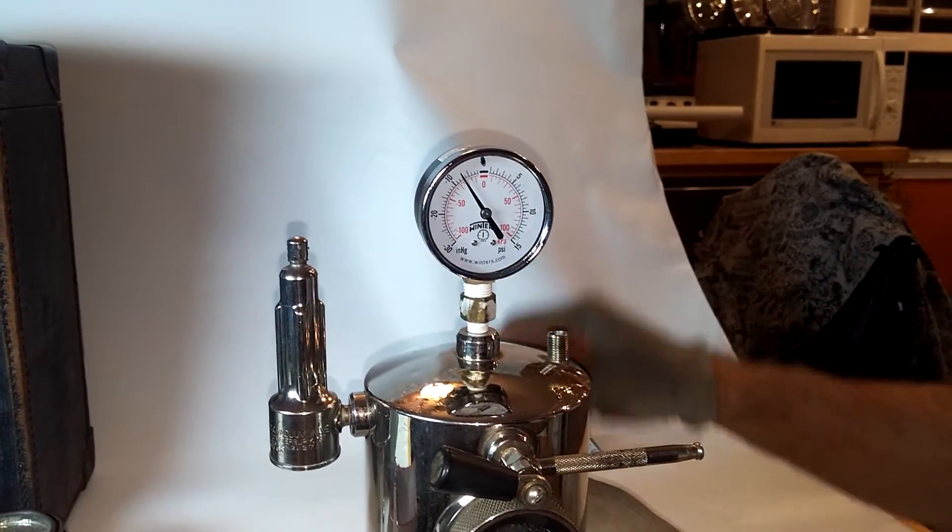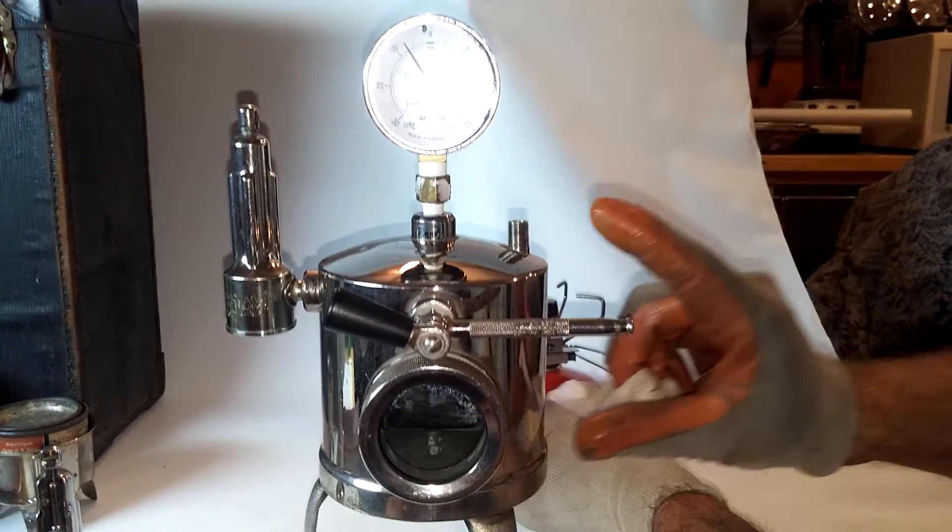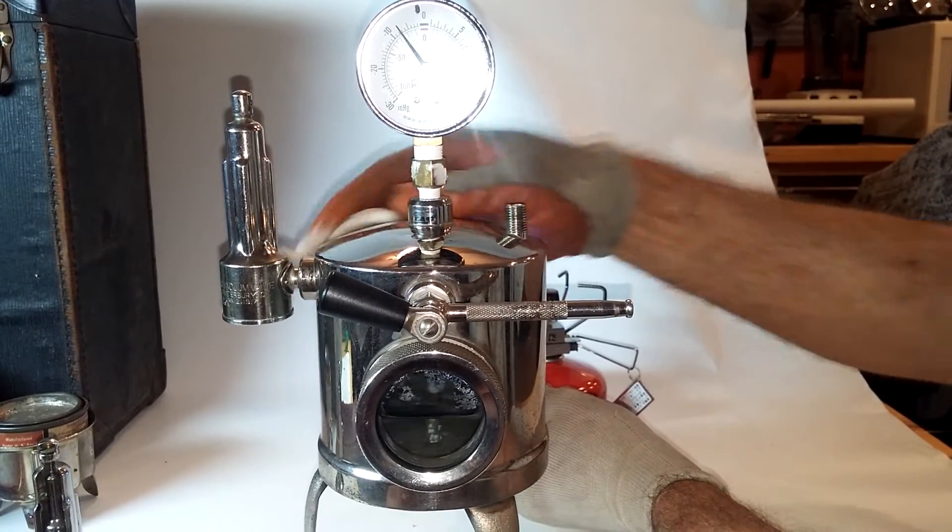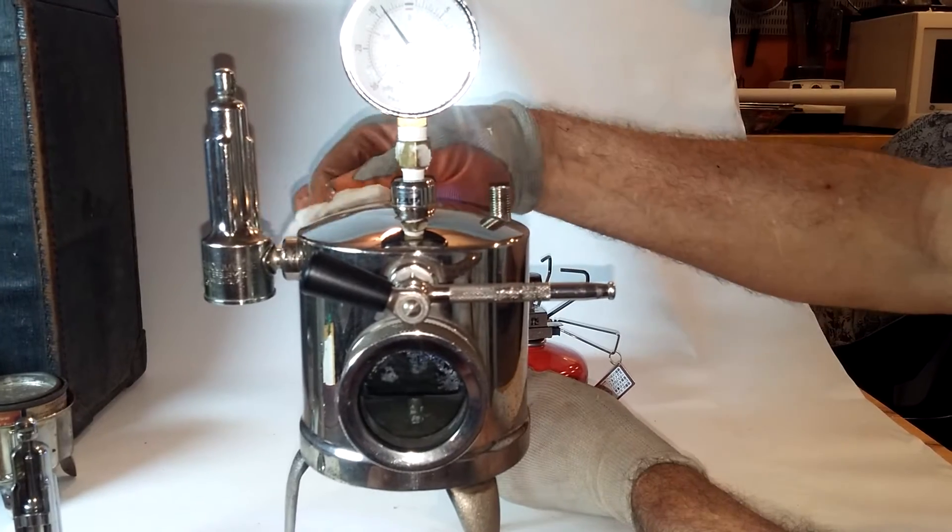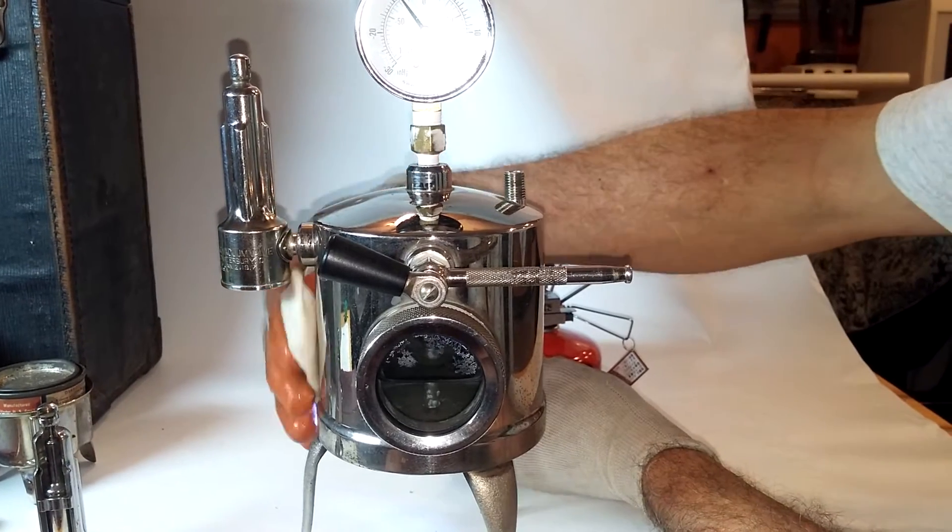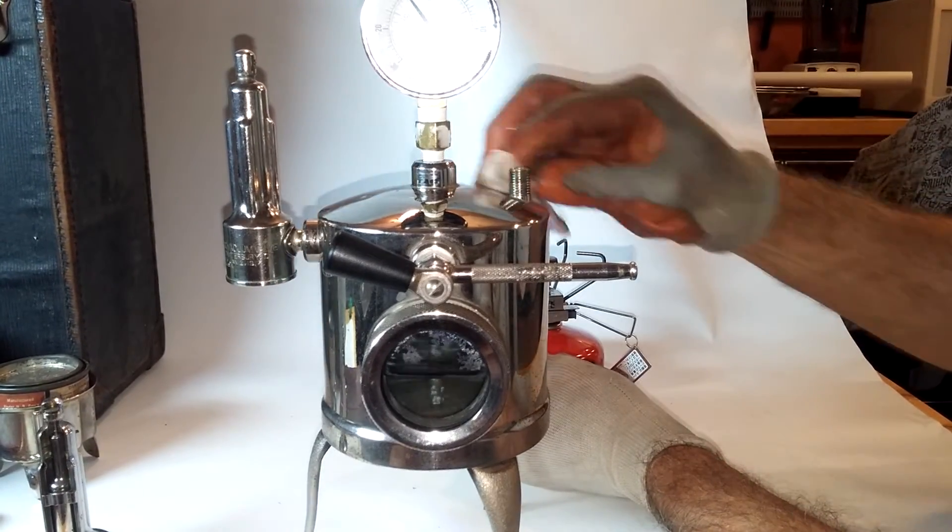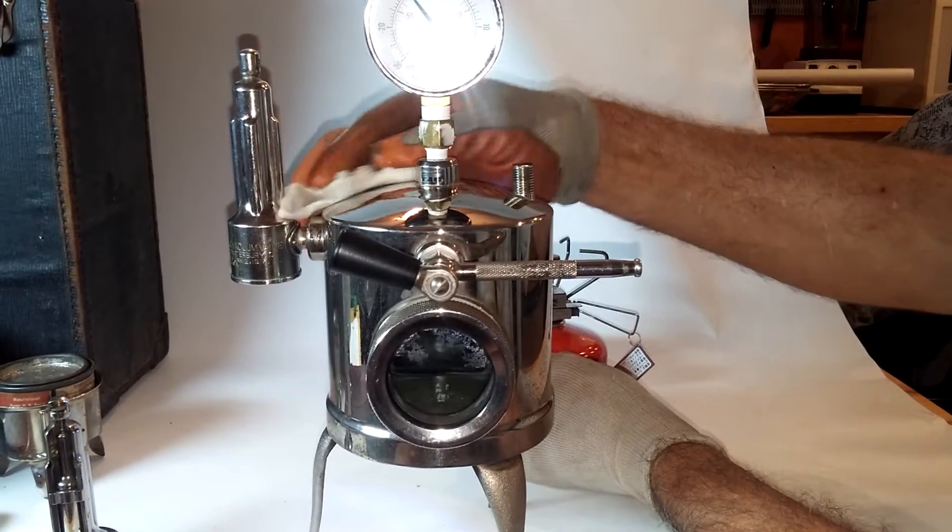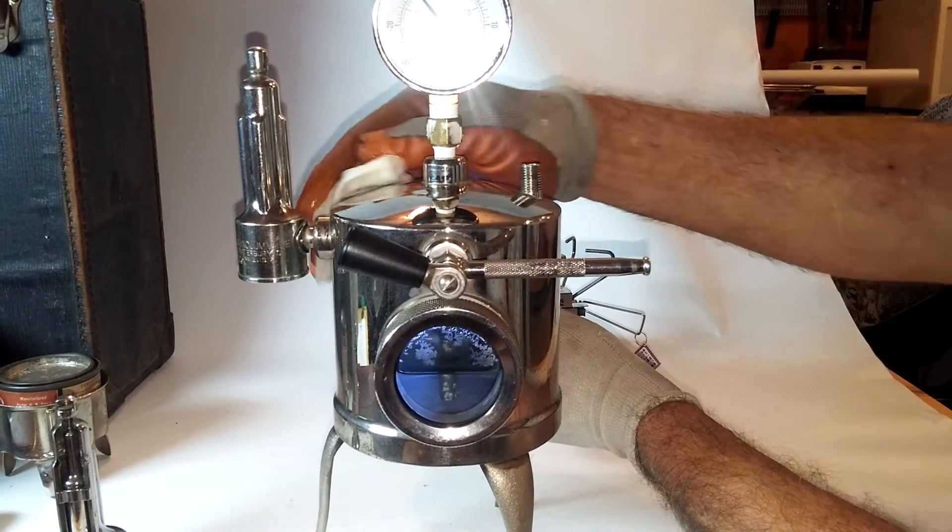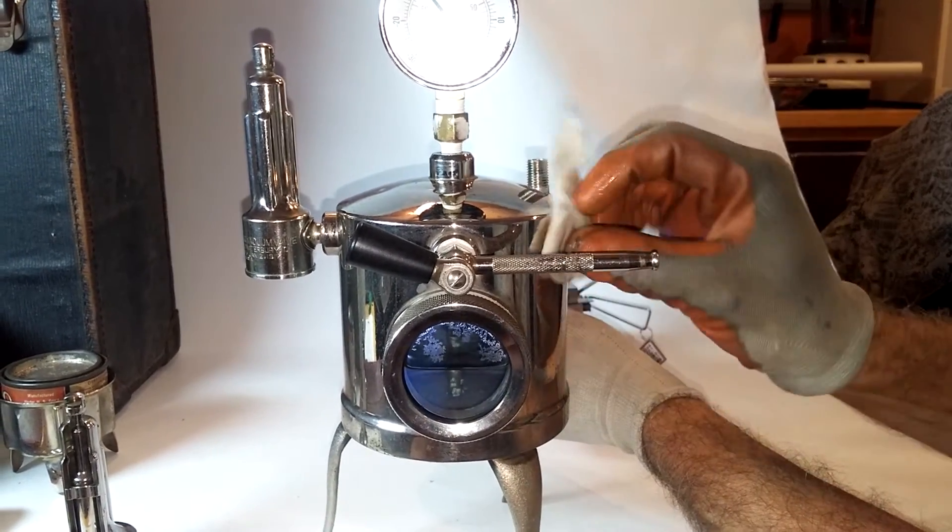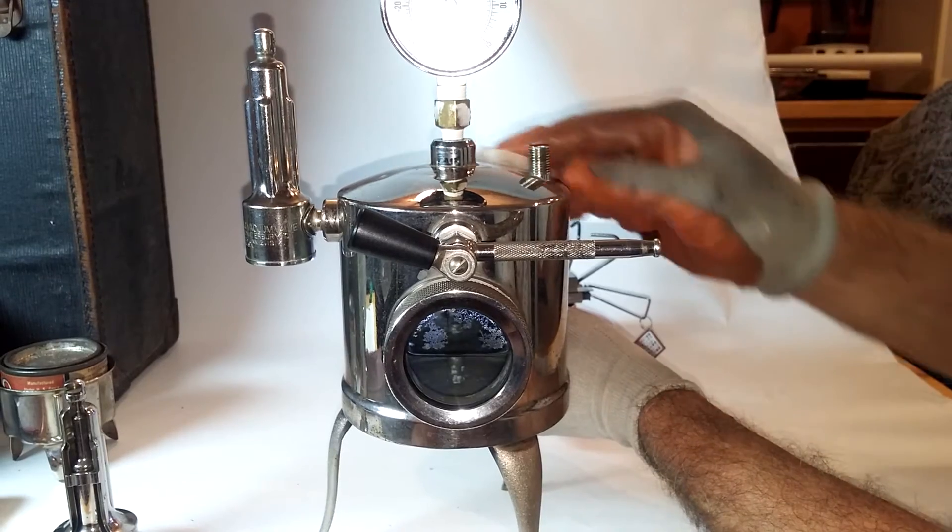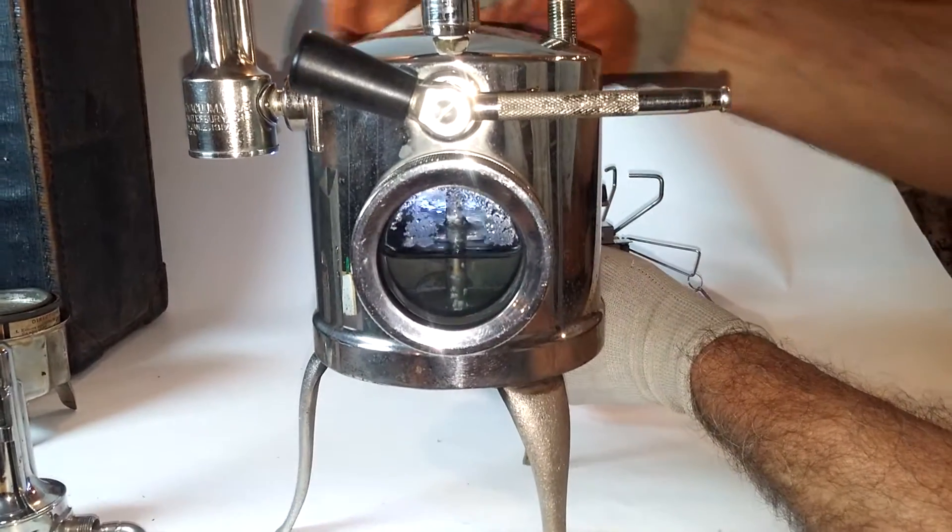This can is approximately four and a half inches in diameter, about four inches high, and so using some rough calculations, it's about 88 square inches. So if we have 15 inches of mercury vacuum in here, that's a pressure differential from the outside to the inside of about seven pounds, which means that on this case is exerted a differential pressure from the atmosphere of approximately 600 plus pounds.